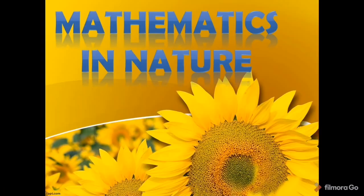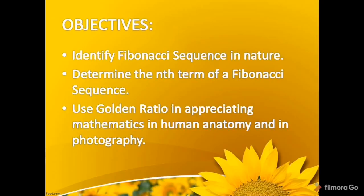Lesson one: Mathematics in Nature. In this lesson we have three objectives. First is to identify the Fibonacci sequence in nature. Second is to determine the nth term of a Fibonacci sequence. Third is to use the golden ratio in appreciating mathematics in human anatomy and in photography.